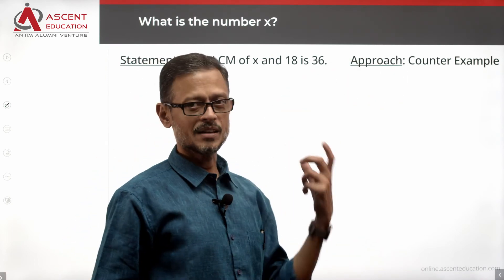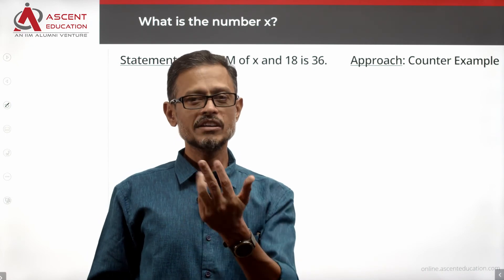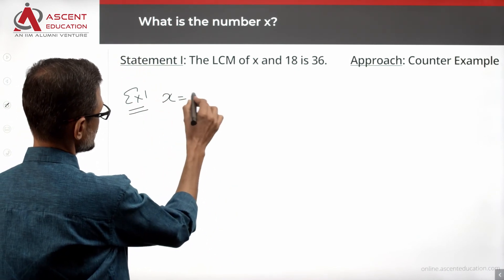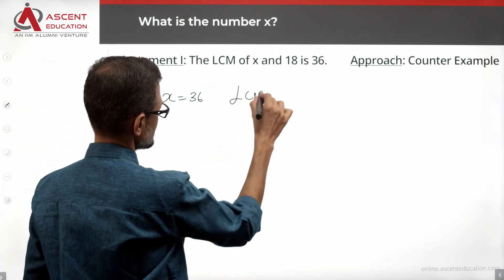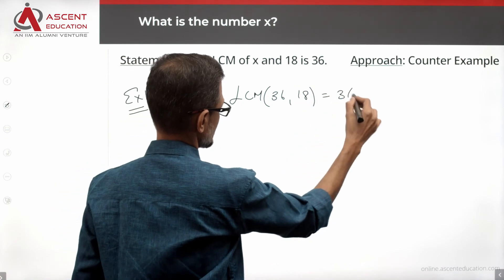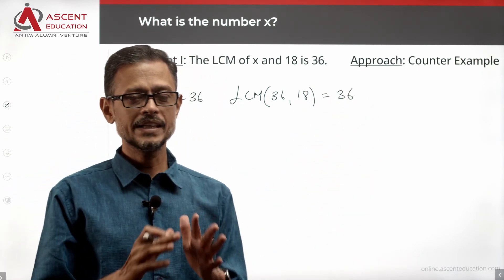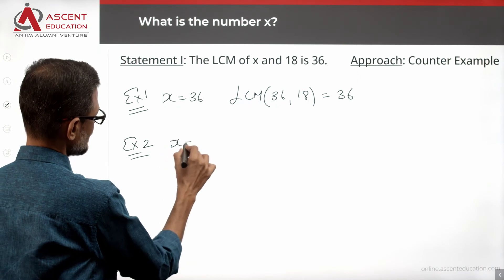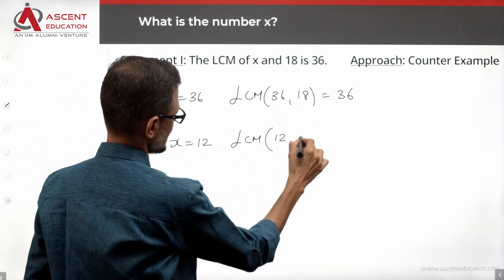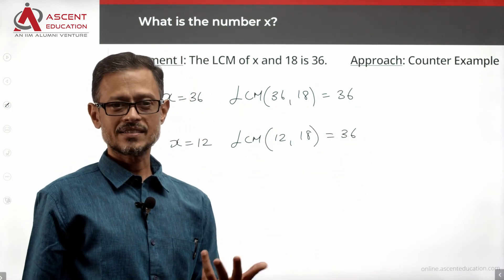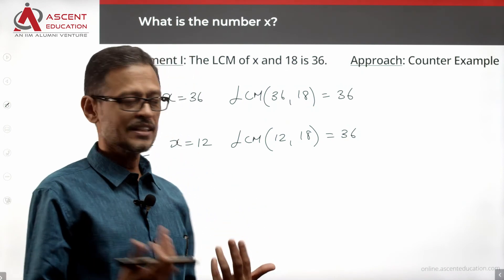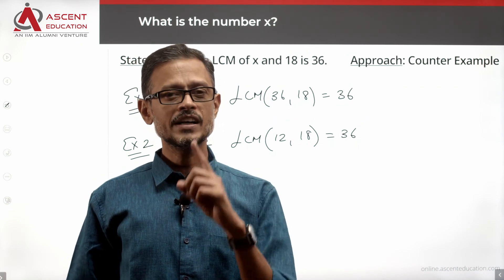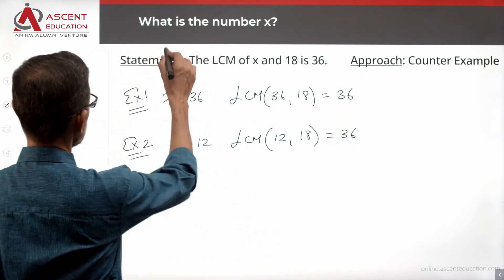The approach is a counter-example. If we can find two values, we don't have a unique answer. Example 1: if x equals 36, then LCM of 36 and 18 is 36. So x could be 36. Example 2: if x equals 12, then LCM of 12 and 18 is also 36. Additionally, x could be 4. There is more than one value available for x, so we are not able to find a unique answer using Statement 1 alone. Statement 1 alone is not sufficient — eliminate answer option A.